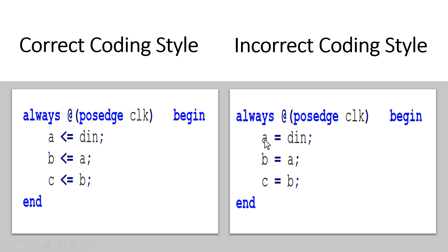When the logical synthesizer reaches the first statement — a = din — it infers one flip-flop where din is the input and a is the output. Because this is a blocking statement, it blocks the execution of the next two statements until a is calculated. Then the synthesizer moves to the second statement: b = a (the new value of a), so b equals the new value of a and no extra logic is required. Similarly, c = b also requires no extra logic. That is why all three nodes a, b, and c are placed at the output of the single flip-flop.